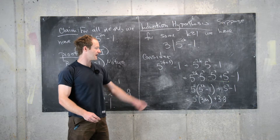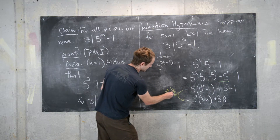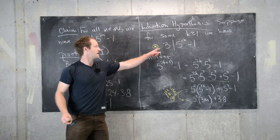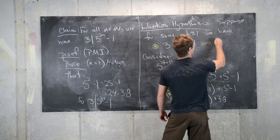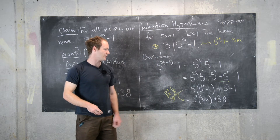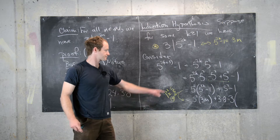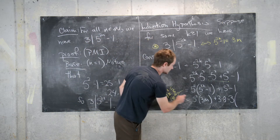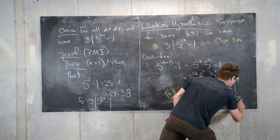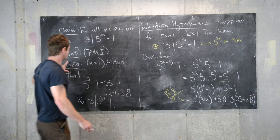We can factor a three out of this whole term — and here we used the induction hypothesis, which is equivalent to five to the two k minus one equals three times m for some integer m. Factoring the three out gives us three times twenty-five m plus eight.